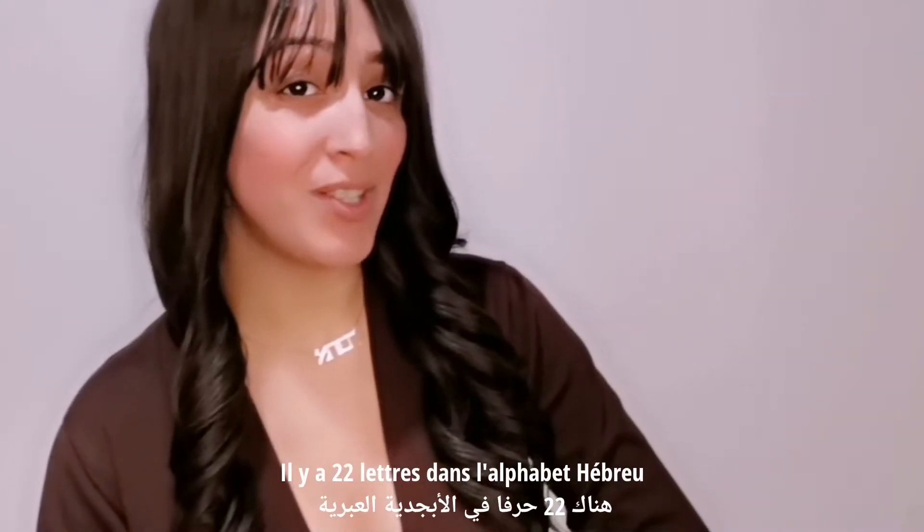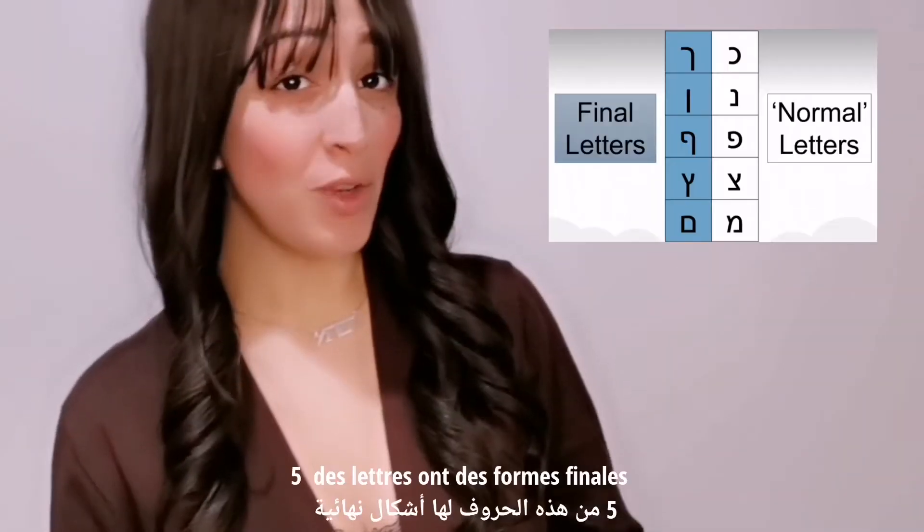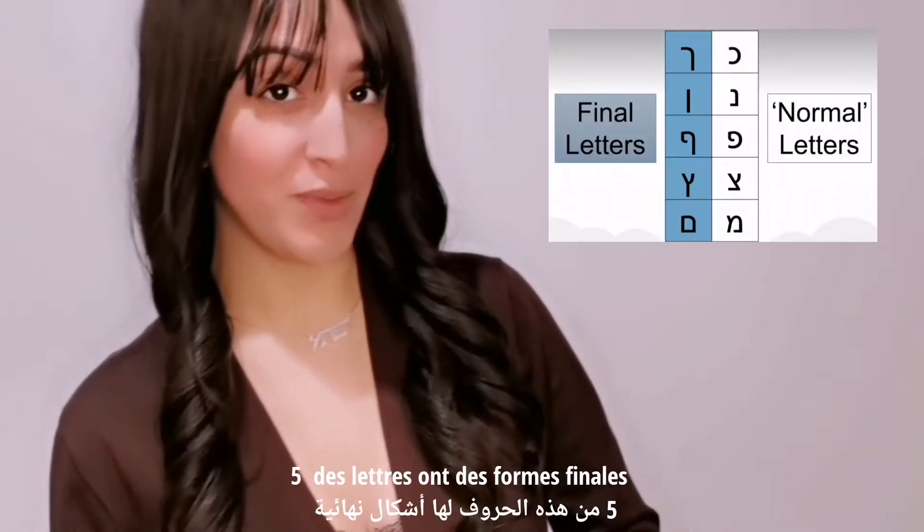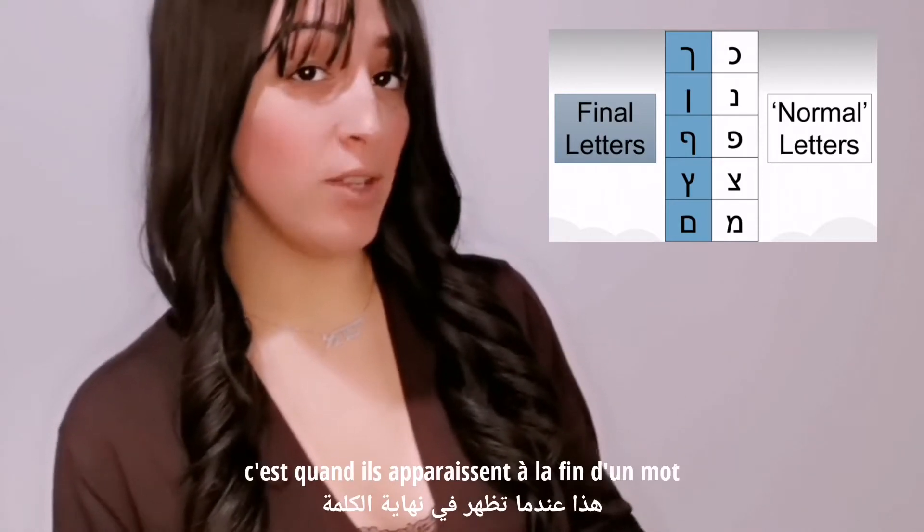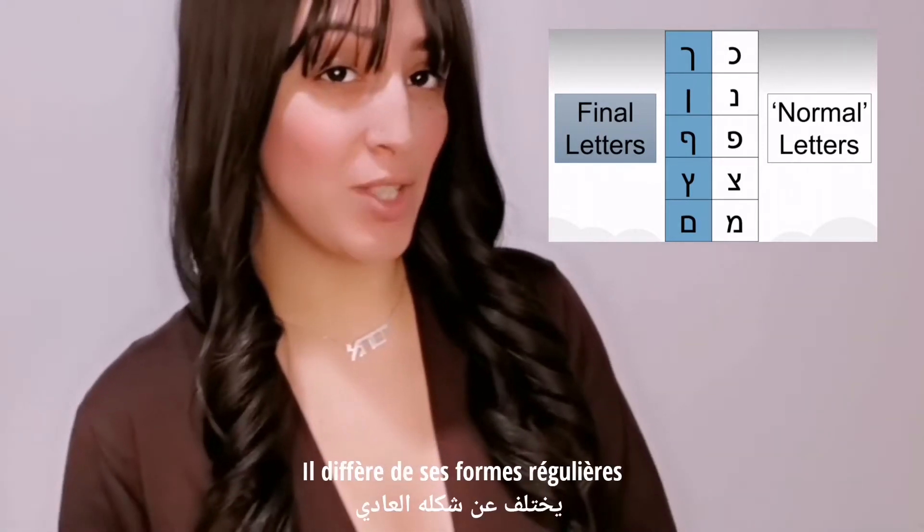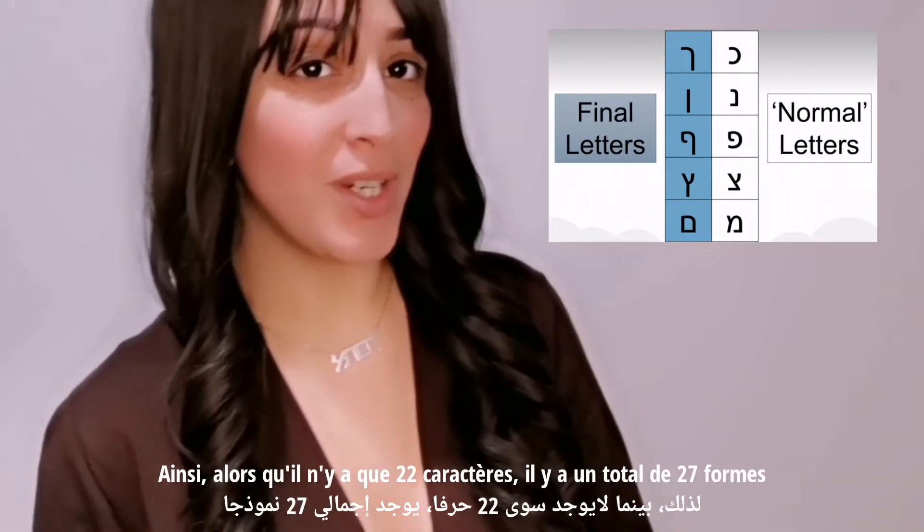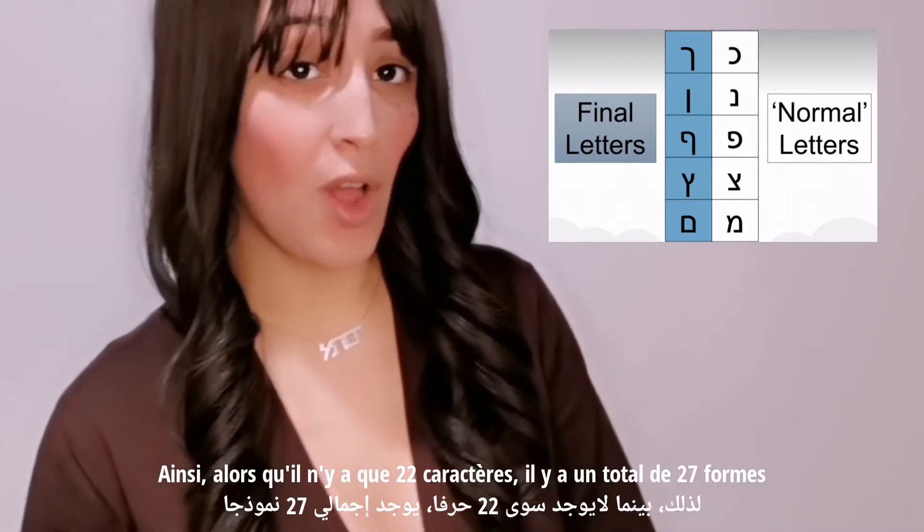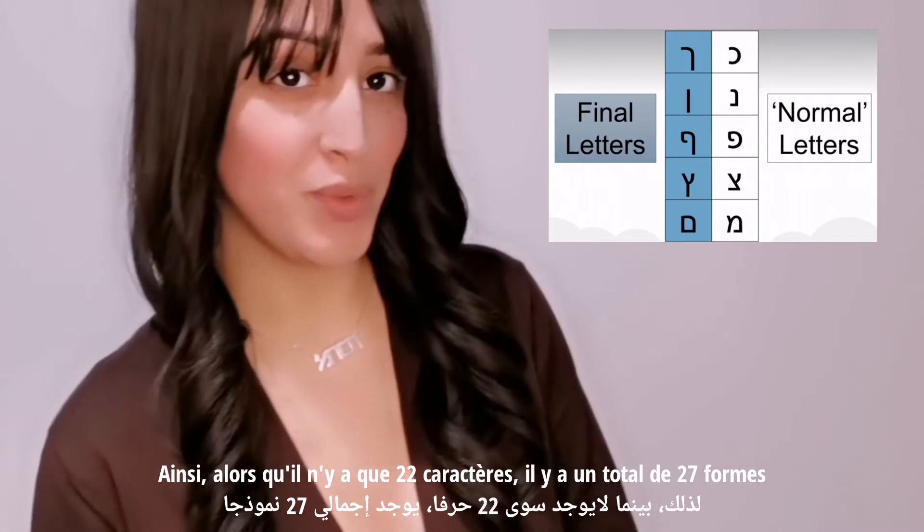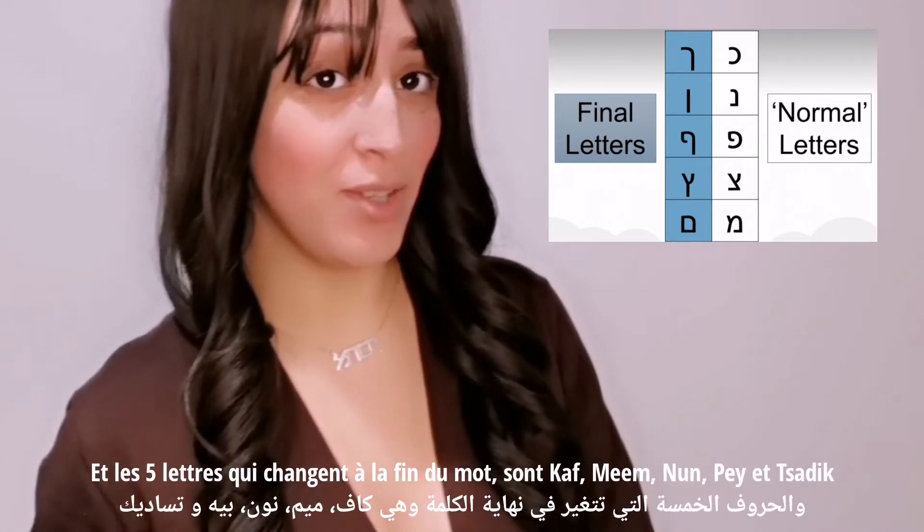There are 22 letters in Hebrew alphabet. Five of the letters have final forms, that is when they appear at the end of the word. It's a different form from the regular forms. So why there are only 22 characters? There are a total of 27 forms, and five letters that change at the end of the word.